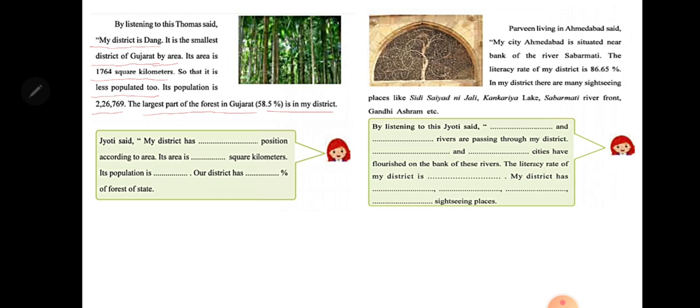The teacher explained: Dang district is very small in area and less populated, but it has the highest forest area of the state — 58.5 percent. Let's see what comes next.